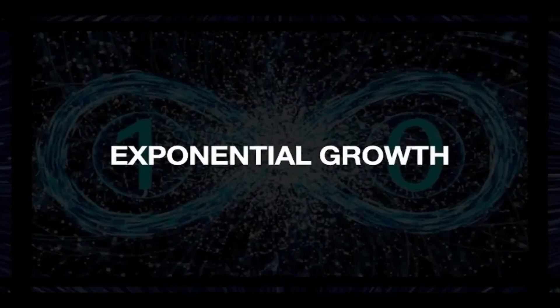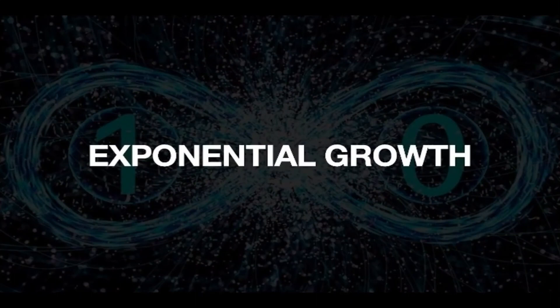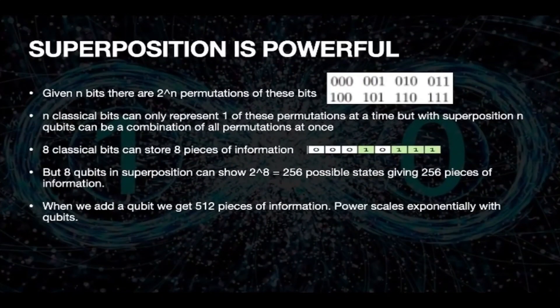Superposition is powerful. If we have n bits, there are 2^n permutations possible. A classical bit can represent only one of the permutations at a time, so eight classical bits will store eight pieces of information. A qubit can represent a combination of these permutations at once because of superposition. Therefore, eight qubits can show 2^8, that is 256 possible states — which means 256 pieces of information. If we add one more qubit, we get 512 pieces of information. Therefore, qubits show exponential growth.